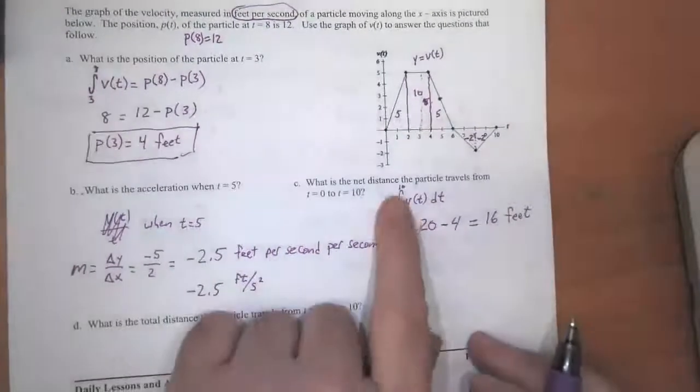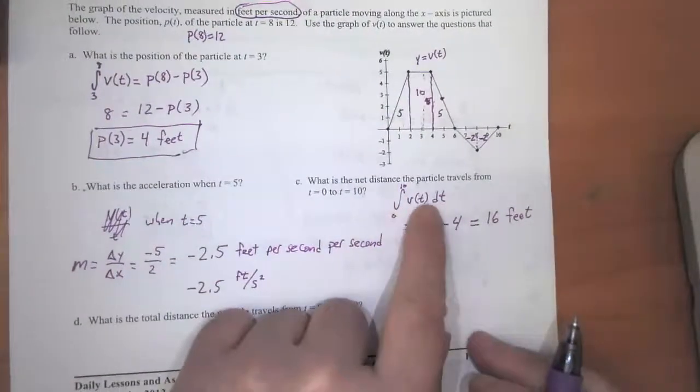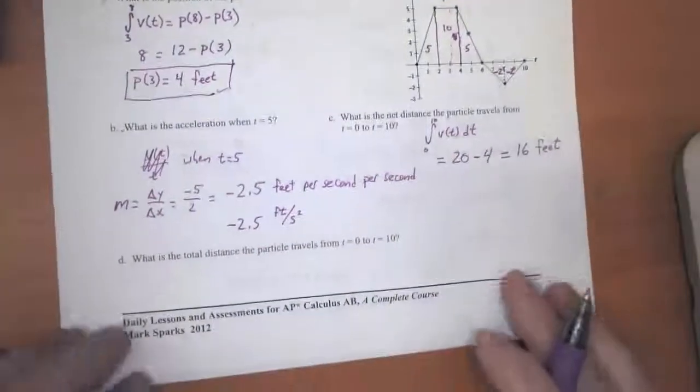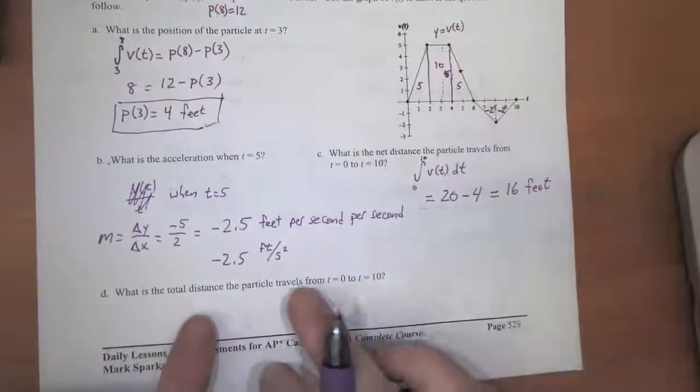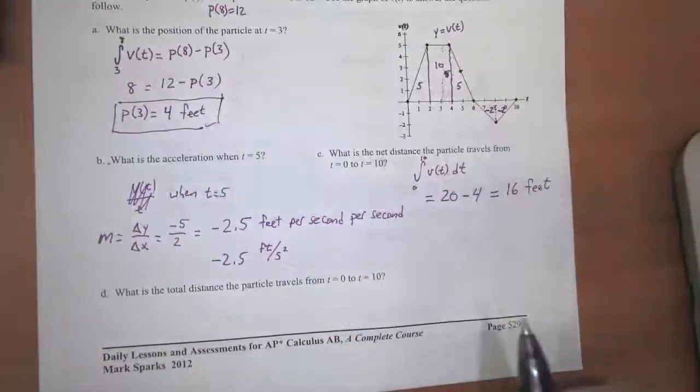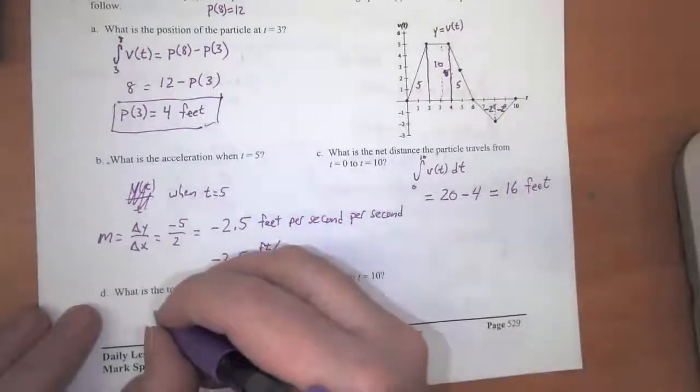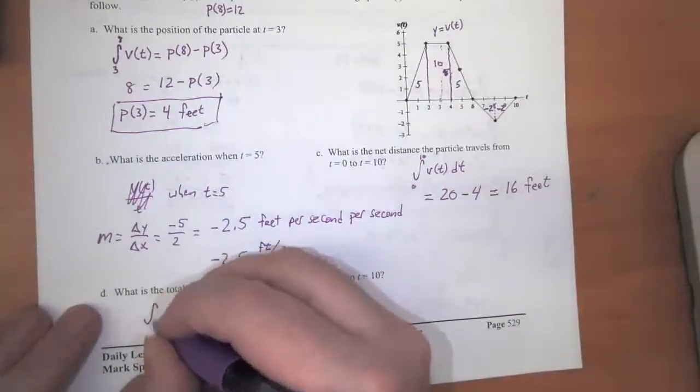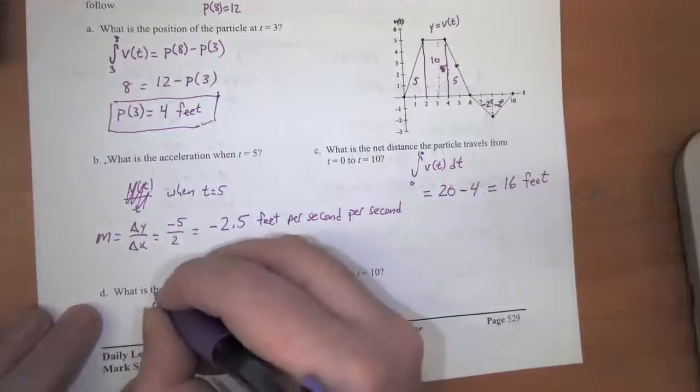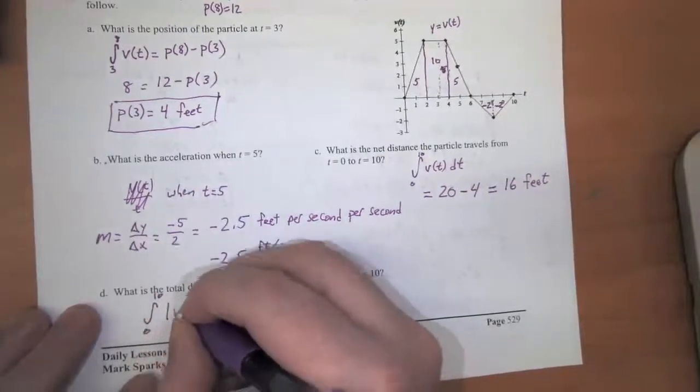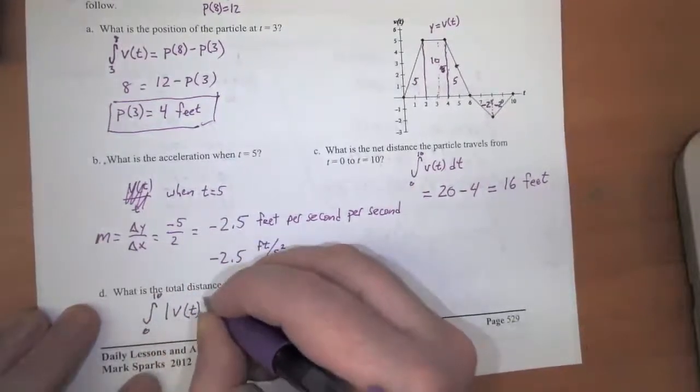So the net distance is the total of this definite integral. How does the total distance differ from the net distance? Remember, this is the definite integral from zero to 10 of the absolute value of v of t dt.